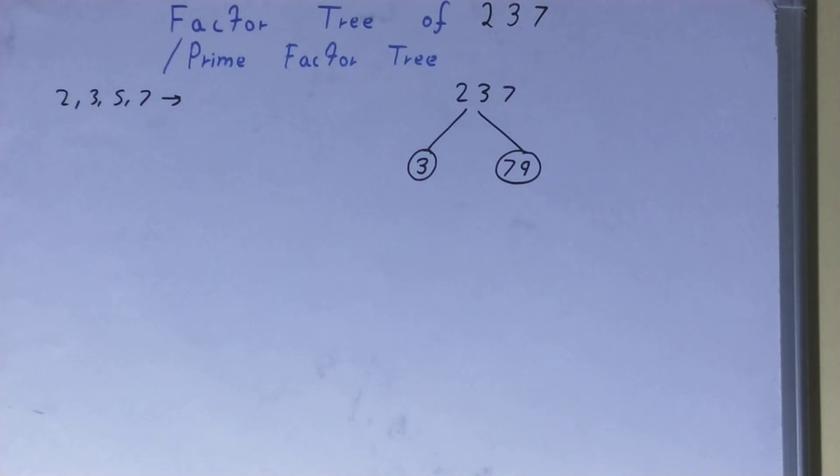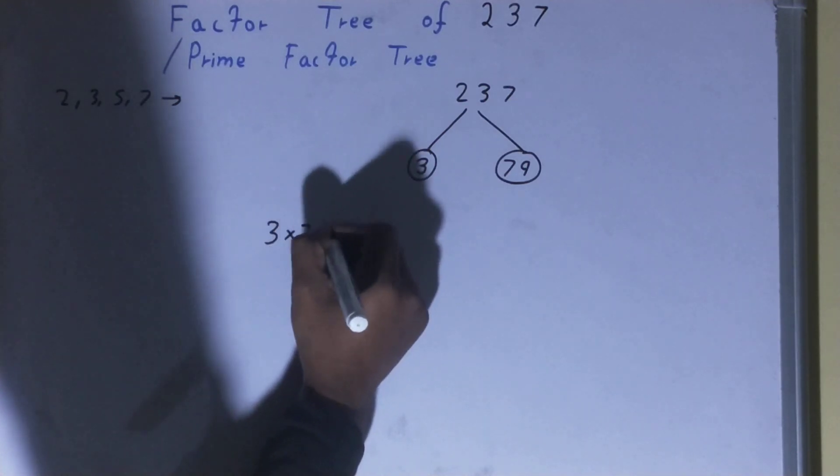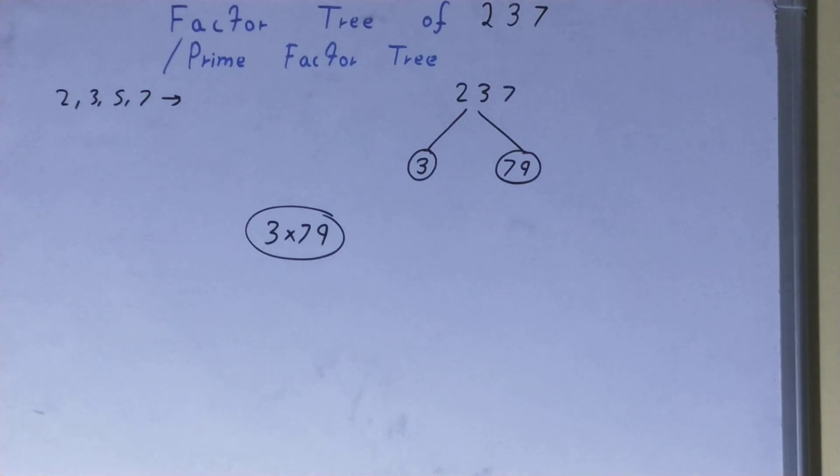Now, if you want, you can write it separately in the form of prime factors like this, and that's it about the factor tree of the number 237. So if you found the video helpful, please do hit the like button, consider subscribing, and thanks for watching.